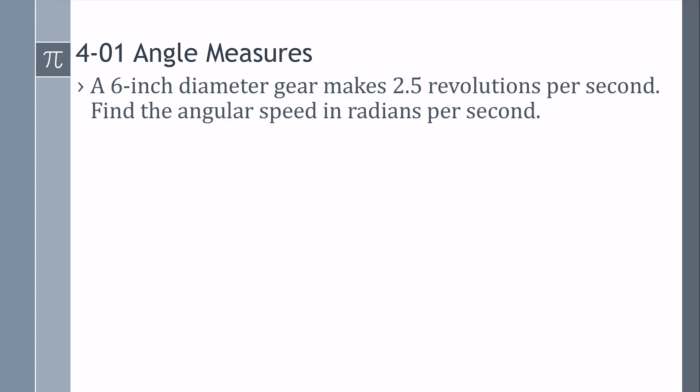Let's say a 6-inch diameter gear makes 2.5 revolutions per second. A revolution is all the way around. Find the angular speed in radians per second. We actually have an angular speed here. It's 2.5 revolutions per second. And that is an angular speed because revolutions is a way to measure the angles. It's 2.5 complete times around. So really, all I have to do is convert this to radians. One revolution is 2 pi radians. Put the revolution on the bottom so it cancels. So, that gives 5 pi radians per second.